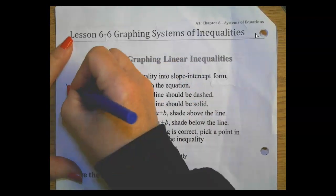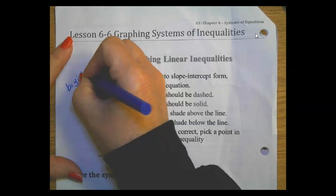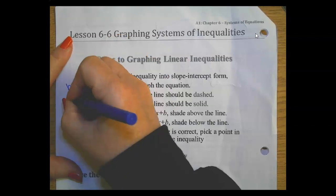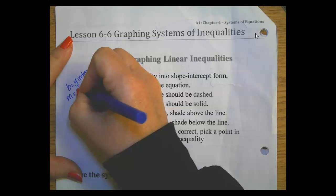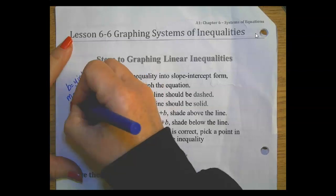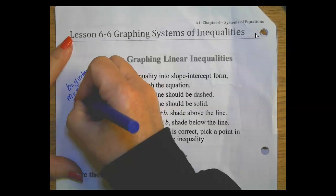The b is your y-intercept and the m is your slope. Remember on your slope, it's rise over run.